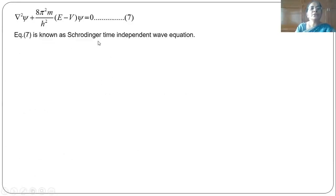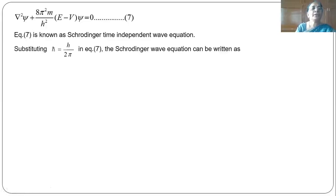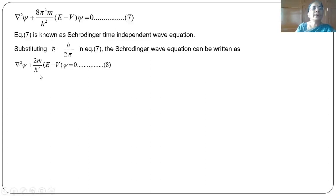This equation is known as the Schrödinger time independent wave equation. There is no time anywhere in this equation, which is why it is called the Schrödinger time independent wave equation. Now substituting h-bar as h by 2π, the expression becomes ∇²ψ + (2m/ħ²)(E minus V) ψ equal to zero.